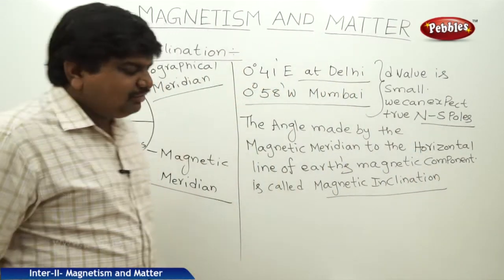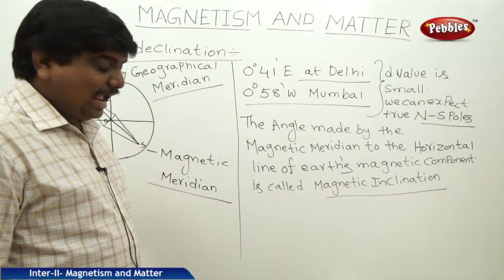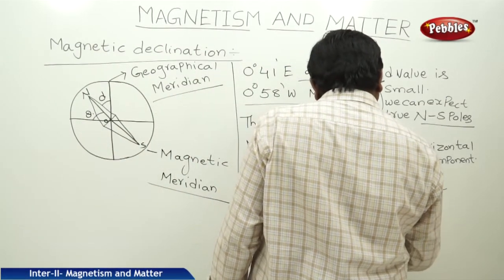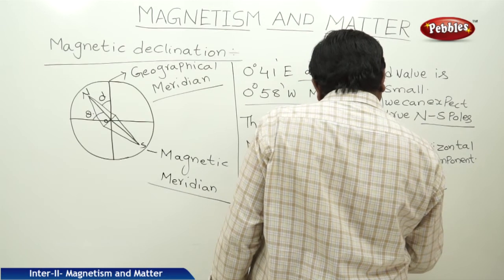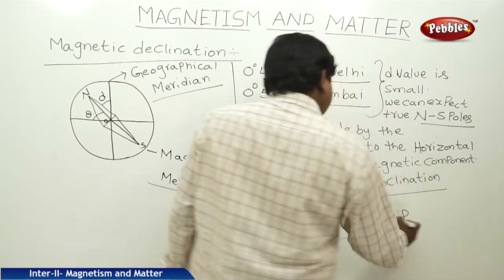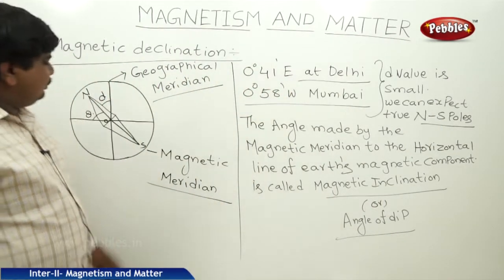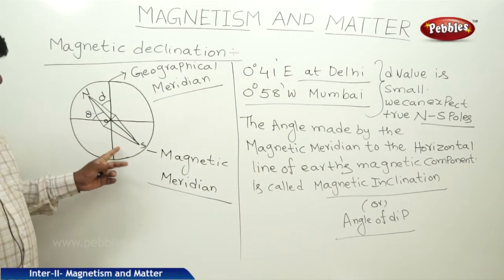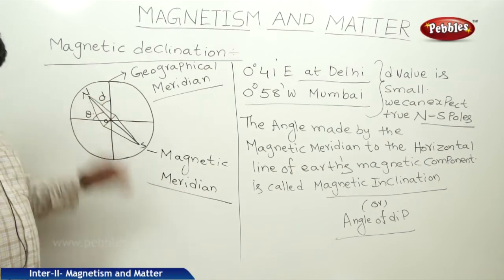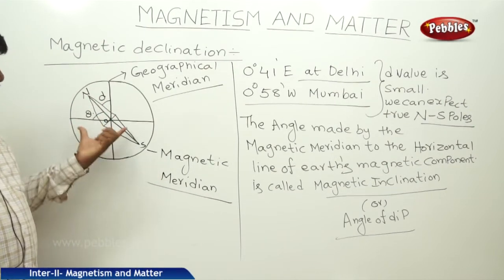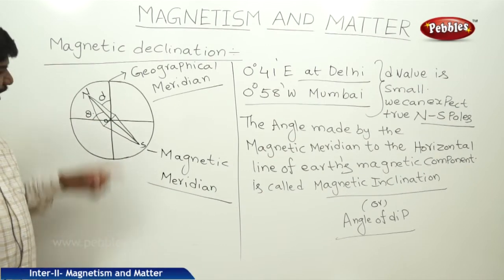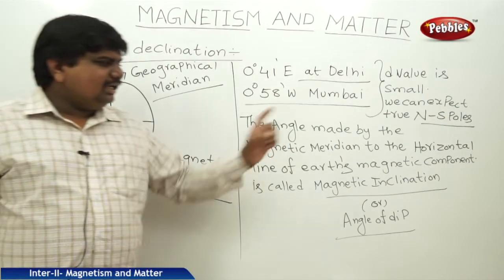Another name for magnetic inclination is angle of dip, also called the dip angle. This magnetic needle is free to move in the spherical system. When it moves, the angle it makes with the horizontal component is the magnetic inclination.